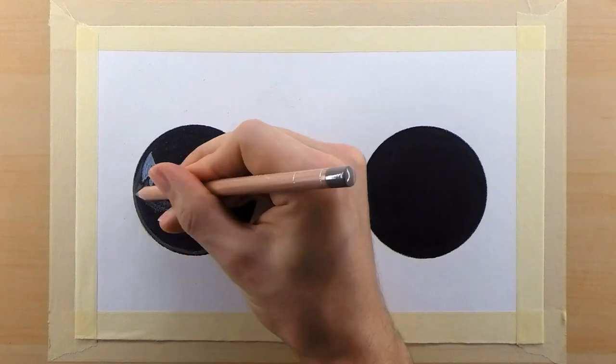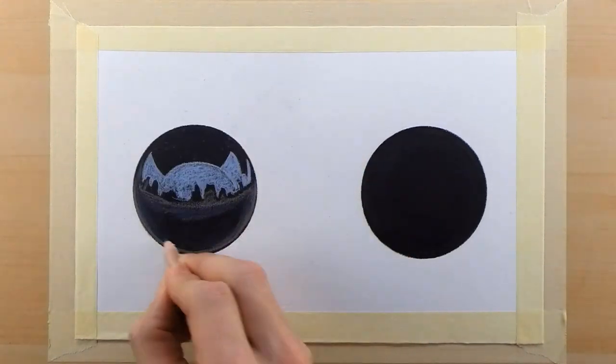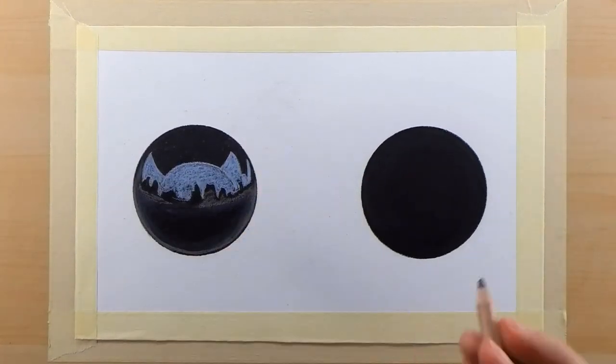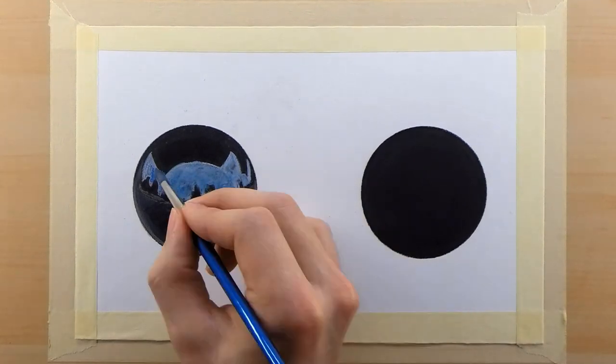I've sprayed the textured fixative on the left circle and I left the right circle completely burnished and unsprayed.